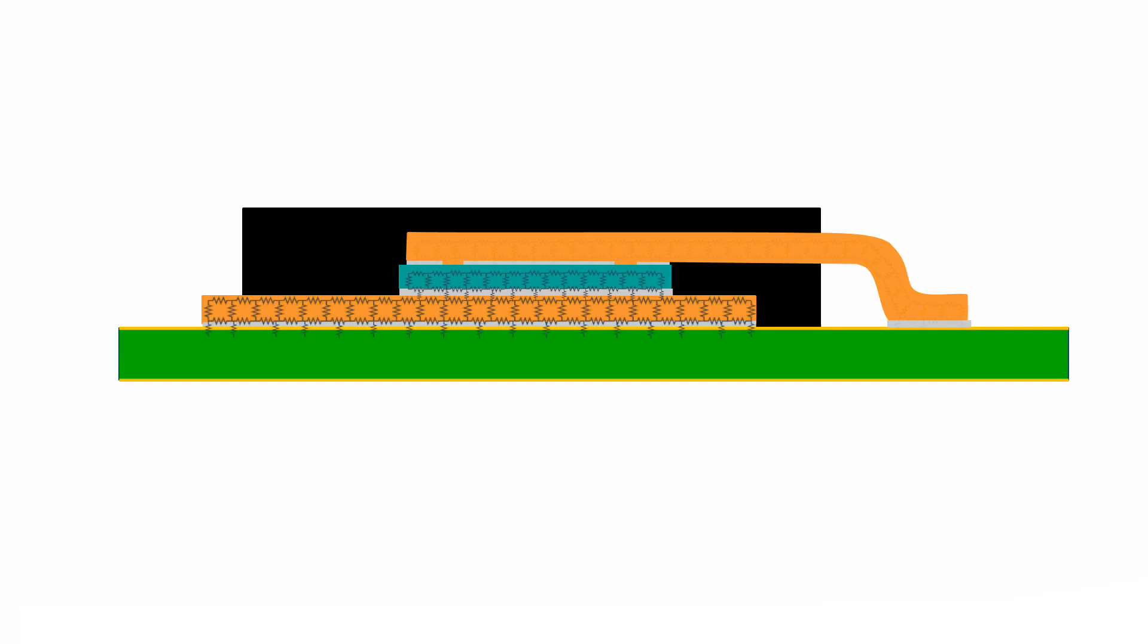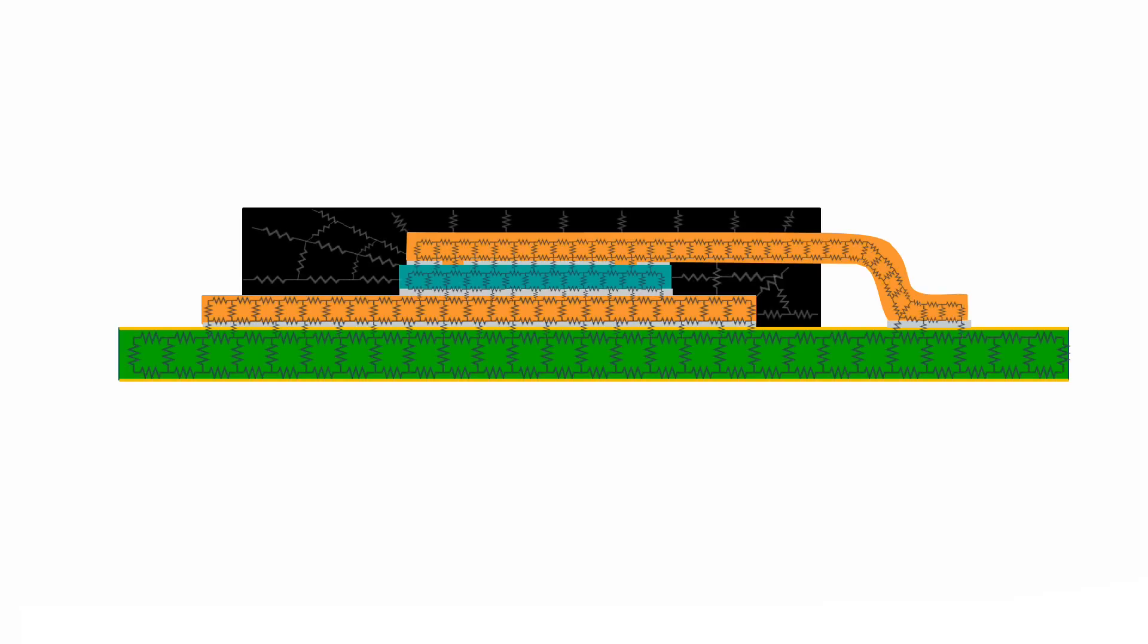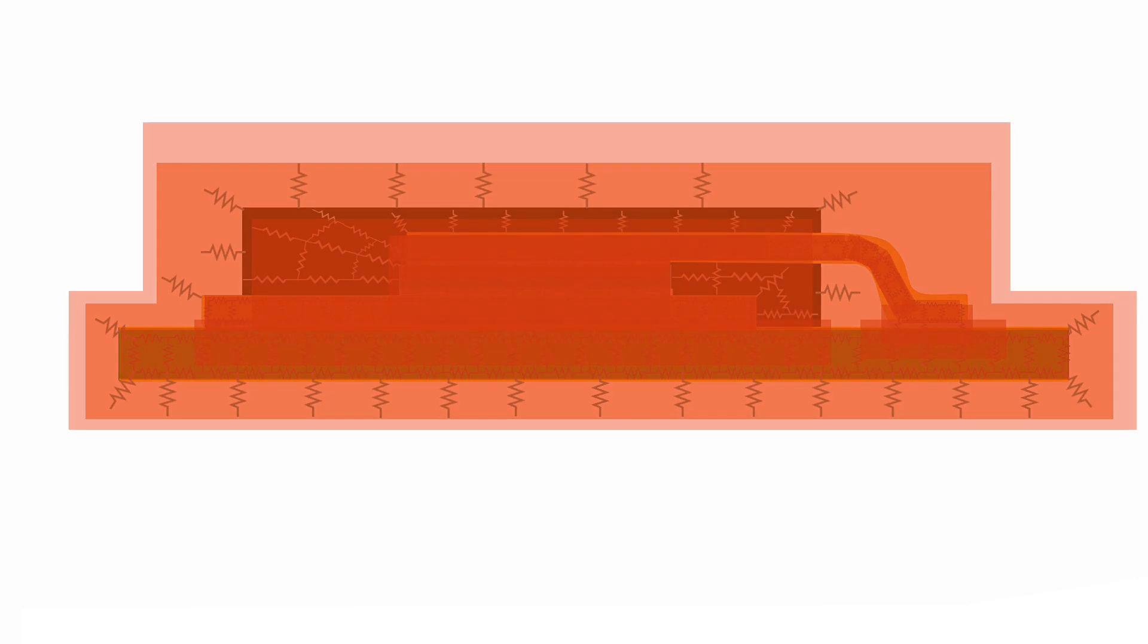RTA Junction to Ambient is the steady state thermal resistance between the junction and the ambient. It shows how easy or hard it is for heat to propagate through the materials between those two points. It's a measure of the thermal inertia of those materials.